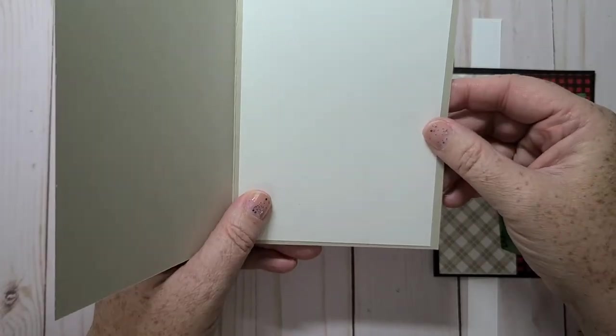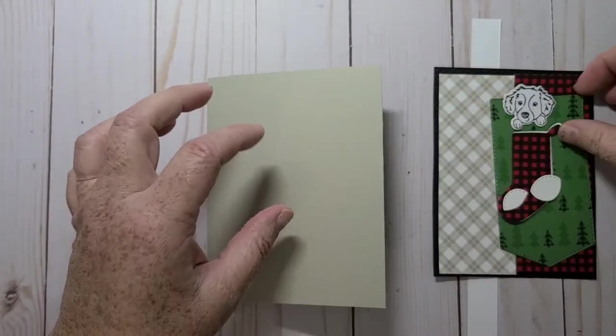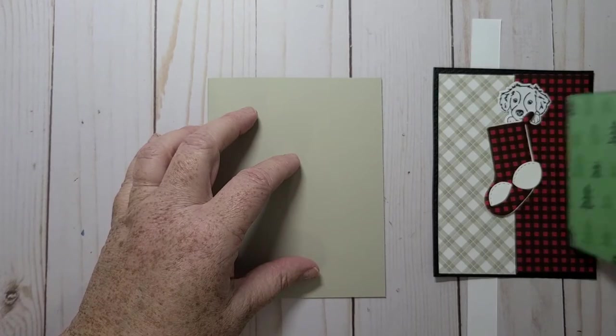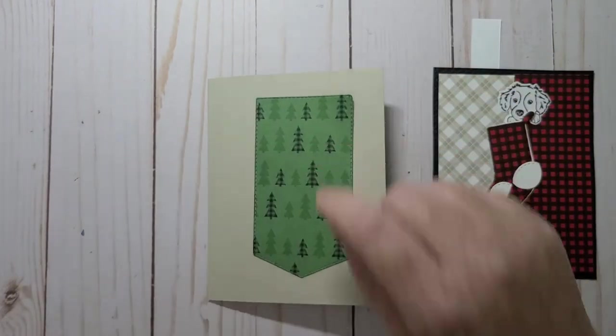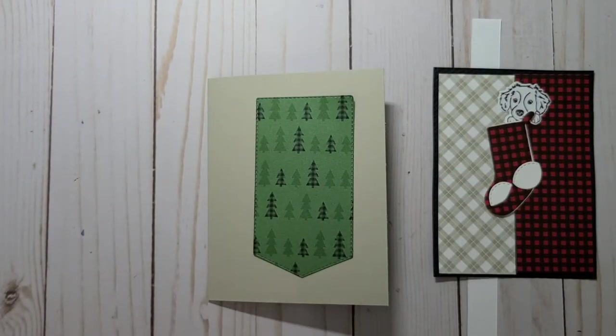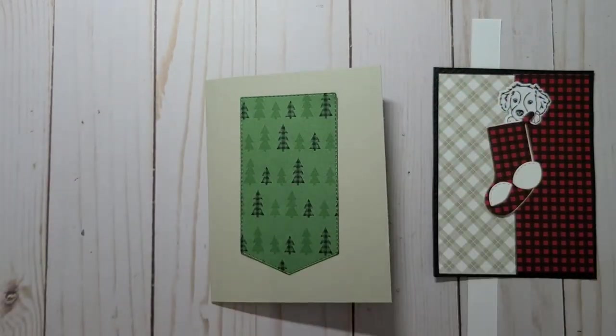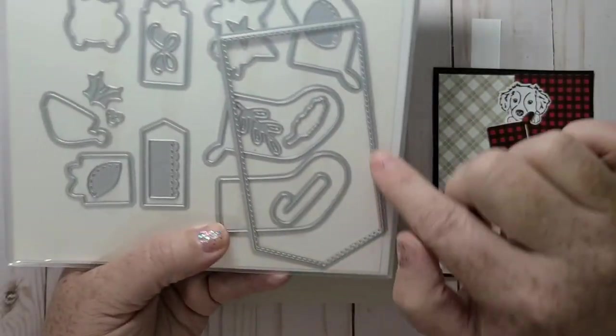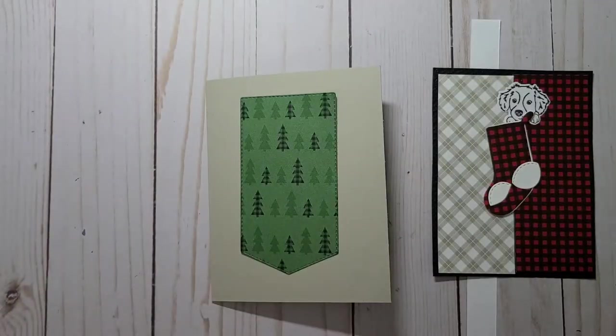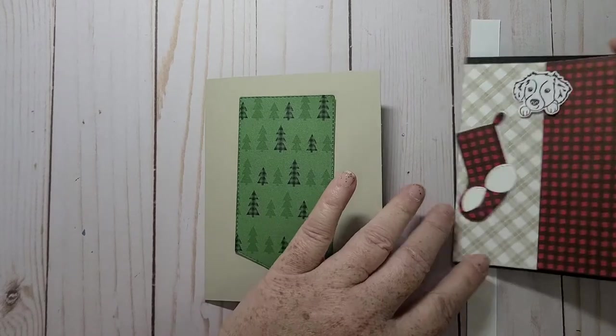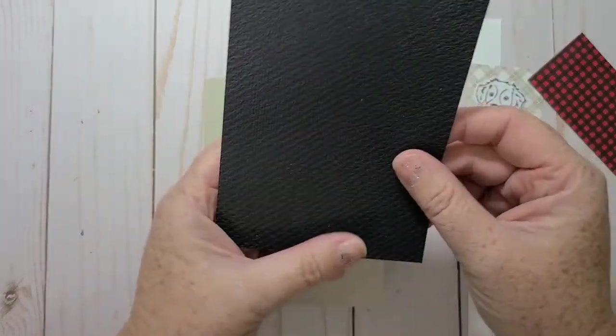A piece of Basic White, four by five and a quarter. I took the die from the stocking set and I cut out this kind of triangular one here, and then I took a piece of Basic Black and I ran it through my Tasteful Textiles embossing folder.